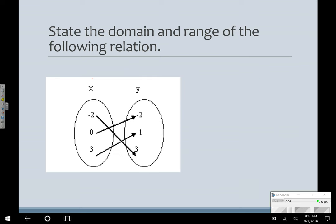In this, this was one of our original relations. State the domain and the range. This is nice and easy, because it's mapped out for you. So my domain is -2, 0, and 3. And my range is -2, 1, and 3.